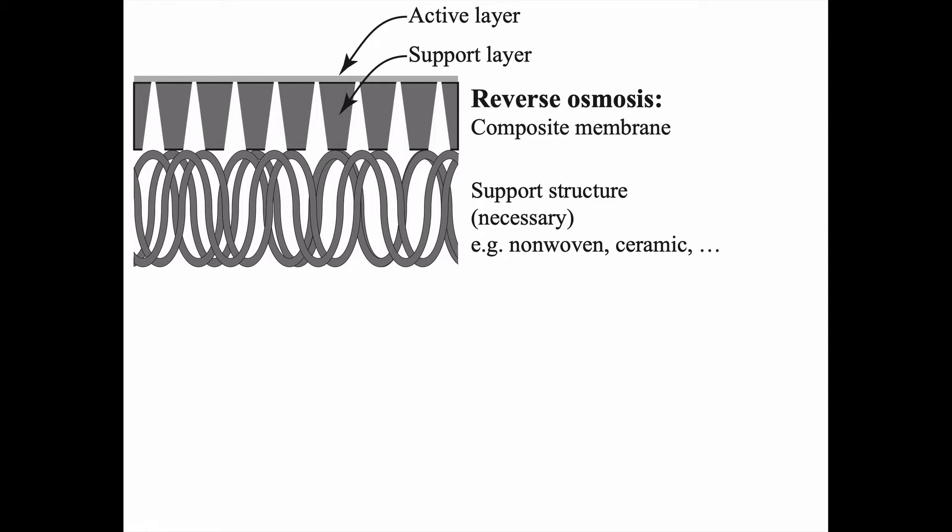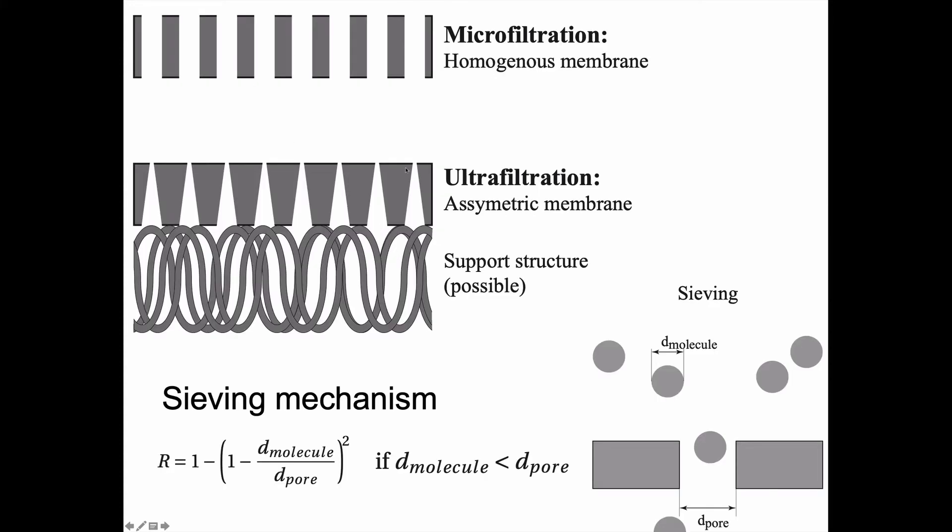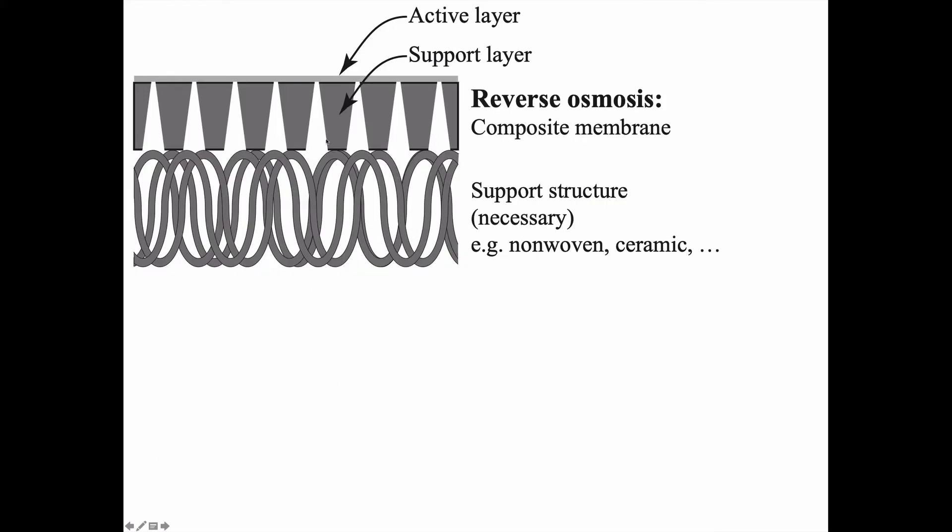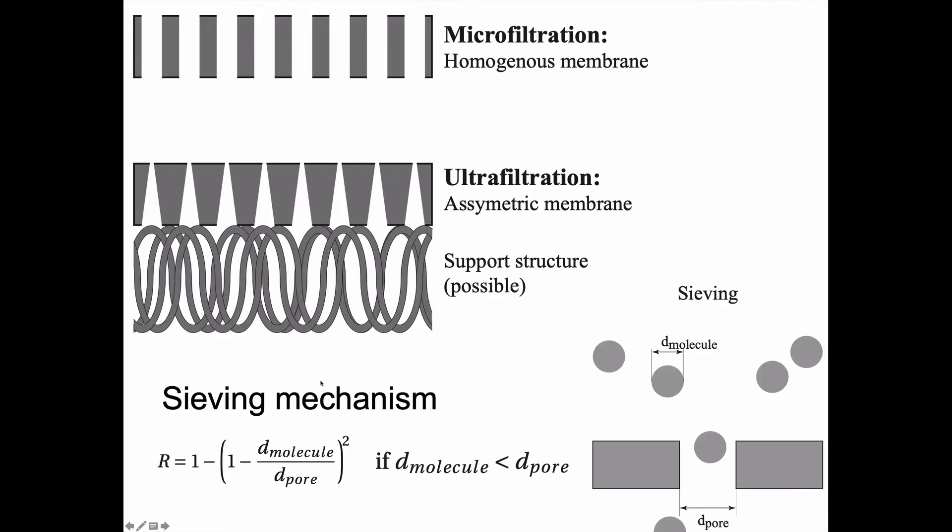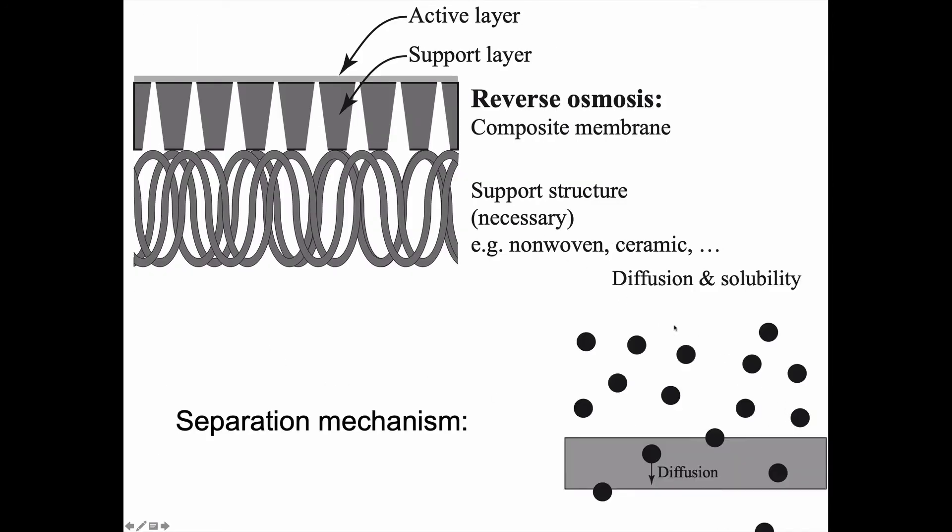In reverse osmosis, which is the finest membrane, you actually have an active layer up here which could actually be without any holes whatsoever, so a thin thing and things need to be soluble in this layer to pass through. And then you have a support layer which looks a bit like the ultrafiltration membrane, and then below that you have a support structure which could be non-woven or ceramic or something like that. So the separation mechanism here is not what we had before, the sieving mechanism, but rather it depends on diffusion and solubility inside this active layer.